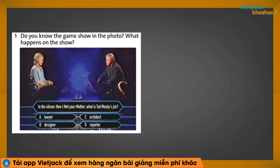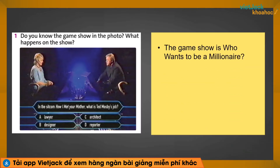Activity number 1: Do you know the game show in the photo? What happens on the show? Các bạn, look at the photo. Tell me the name of the TV show. Đây là game show rất quen với chúng ta đúng không? The game show is 'Who Wants to Be a Millionaire?' — Ai là Triệu Phú.